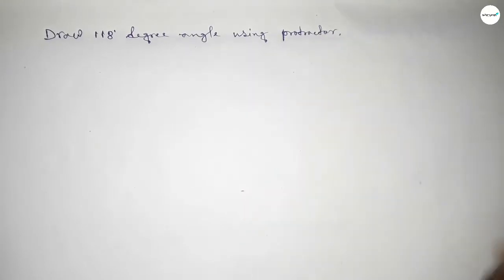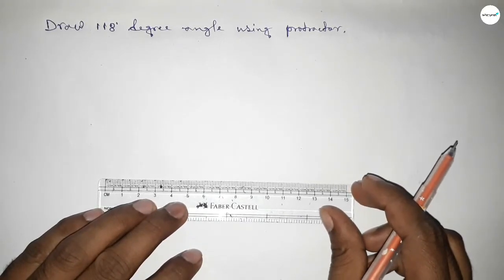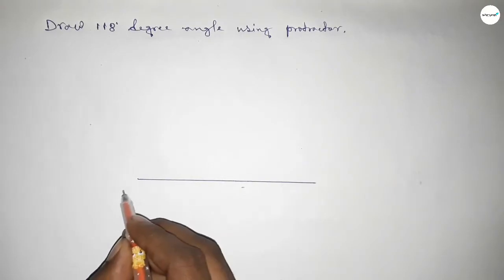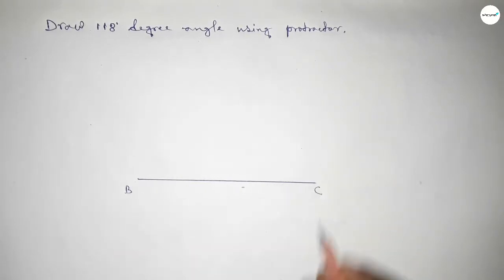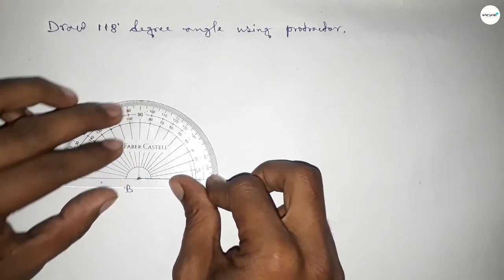So let's start the video. First of all, we have to draw here a straight line of any length and taking here point B and here C. Now putting the protractor on the point B perfectly, then counting the angles.